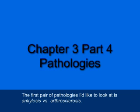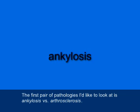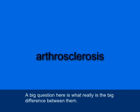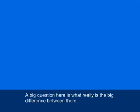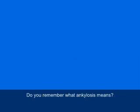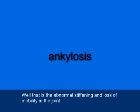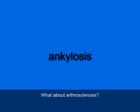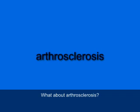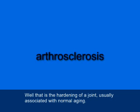The first pair of pathologies I'd like to look at is ankylosis versus arthrosclerosis. A big question here is what really is the difference between them? Ankylosis is the abnormal stiffening and loss of mobility in a joint. Arthrosclerosis is the hardening of a joint that's usually associated with normal aging.